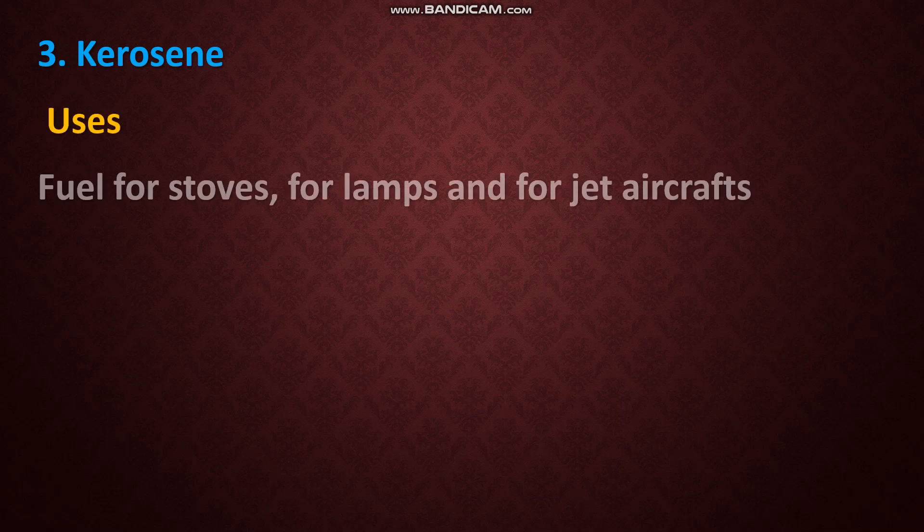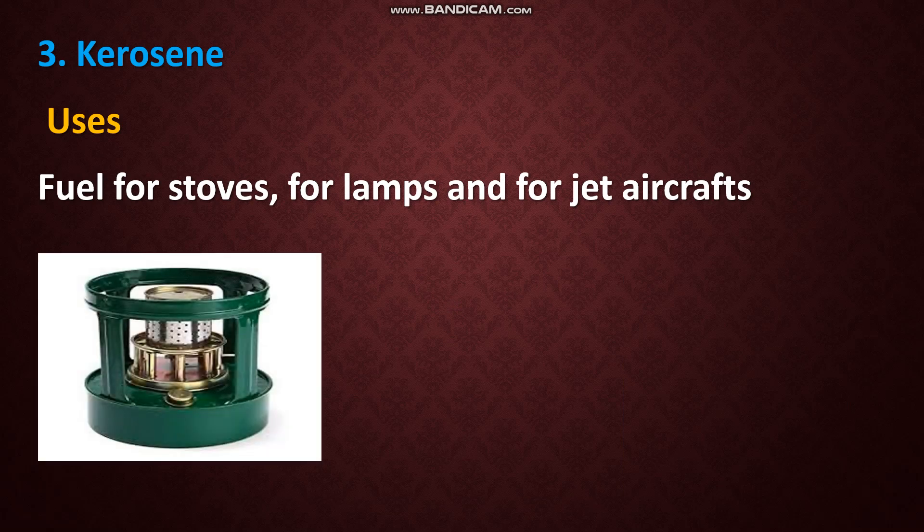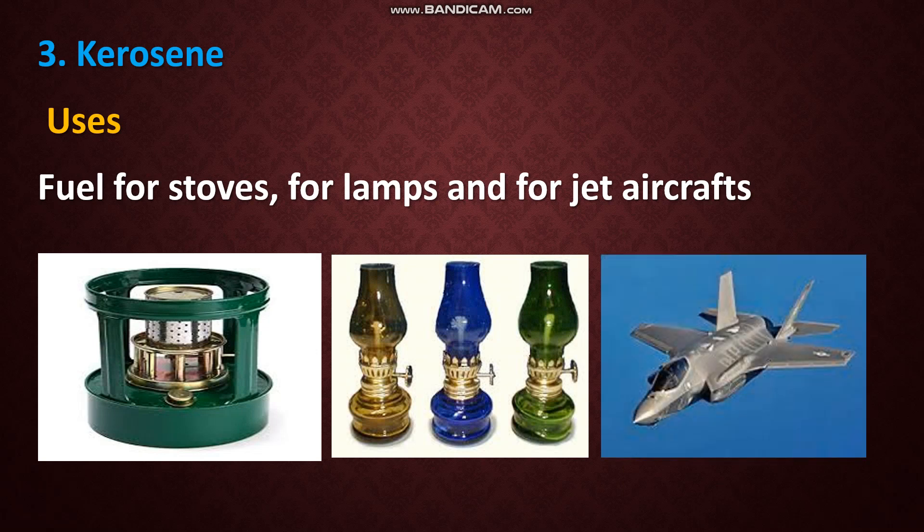Next it is kerosene. Long back, where electricity was not available, people used kerosene lamps and kerosene stoves. It is used as a fuel for stoves and for lamps, and also for jet aircraft.